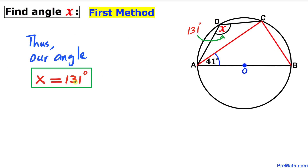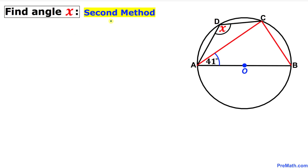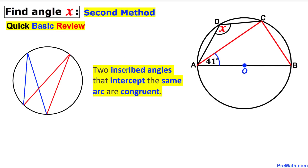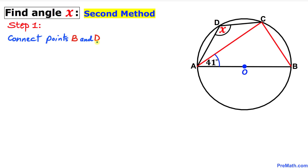Now let me share the second method. First, a basic review: two inscribed angles that intercept the same arc are congruent. We can see that these two angles are congruent because they intercept the same arc, and likewise another pair of angles is congruent since they intercept the same arc as well.